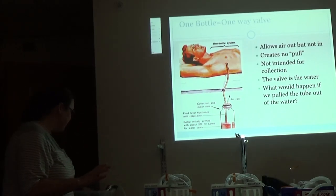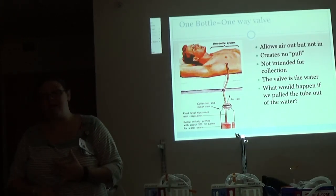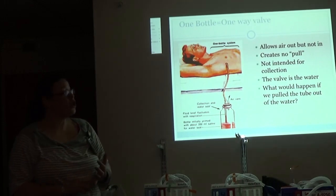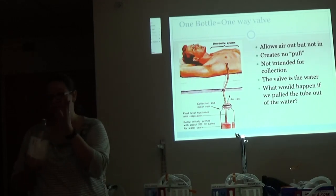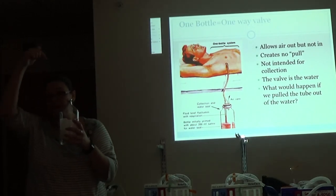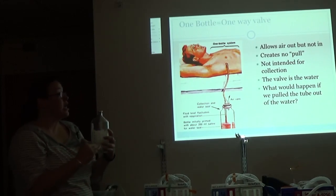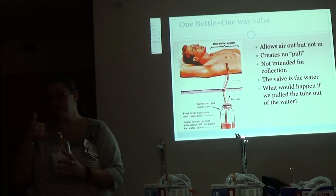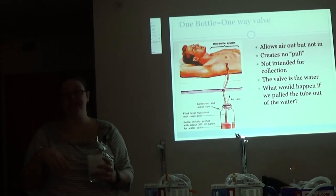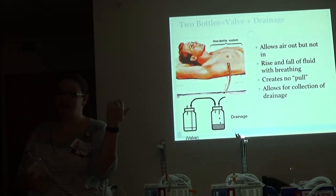So, in olden days, and it's important to sort of know what olden days actually was because it'll help you figure it out. We've started off with a one-bottle, one-way valve. So this allowed air out but not in. There's no pull. It's not intended for drainage, and the valve is in the water. So we used these glass vials, filled it up to two centimeters. Put the tube under two centimeters of water. That allowed the air to bubble out and created a water seal so that nothing could get back into the chest. So what happens if we pull that tube out of the water? Air. Yep, air goes back into the chest. You get a repeat pneumothorax.